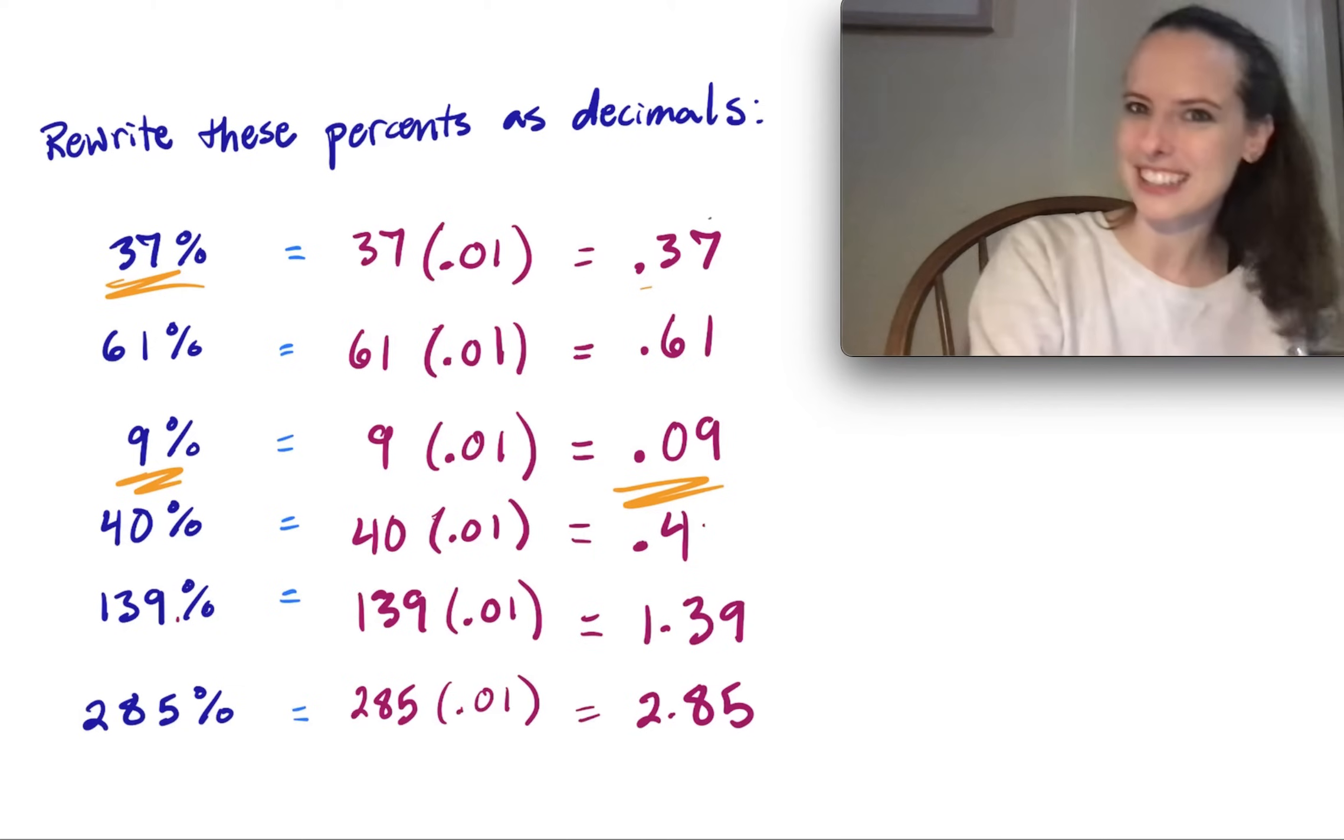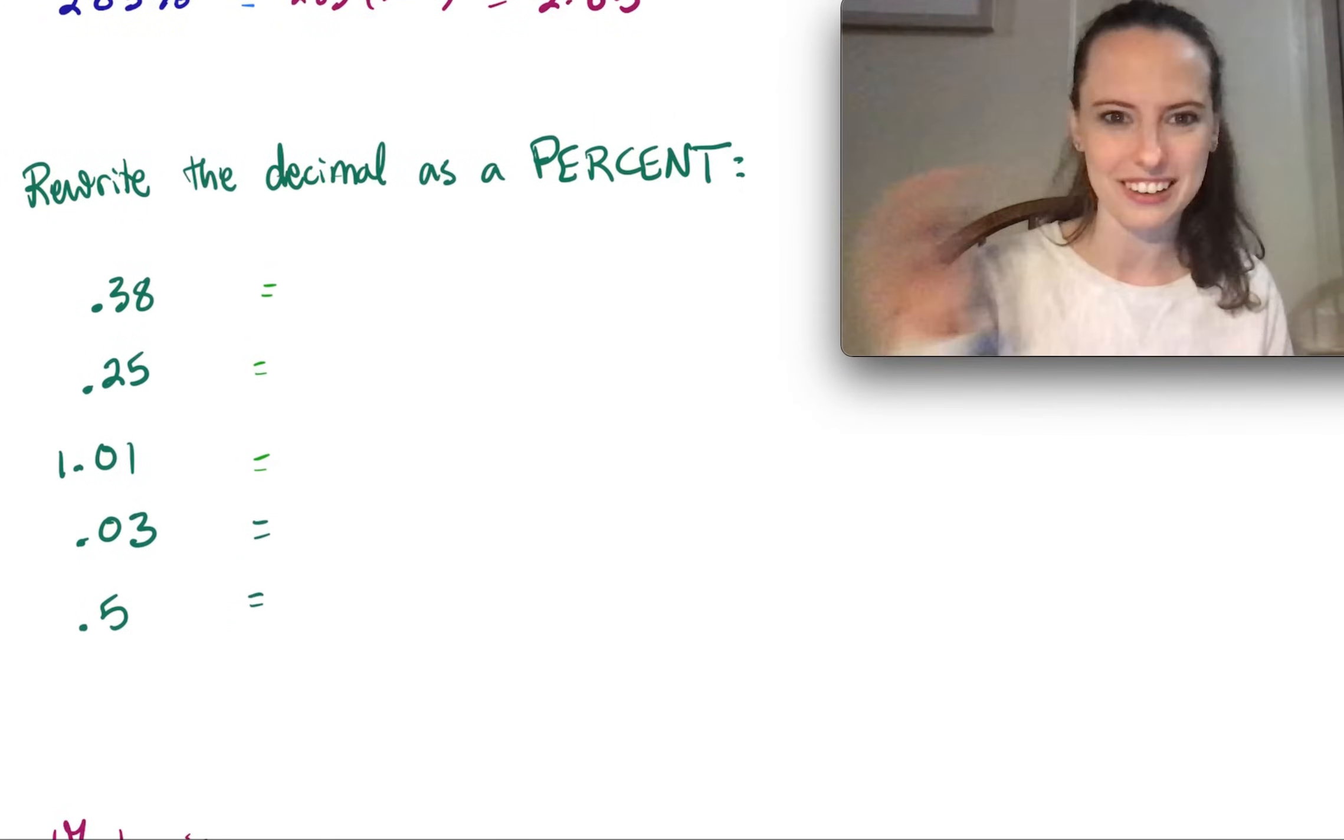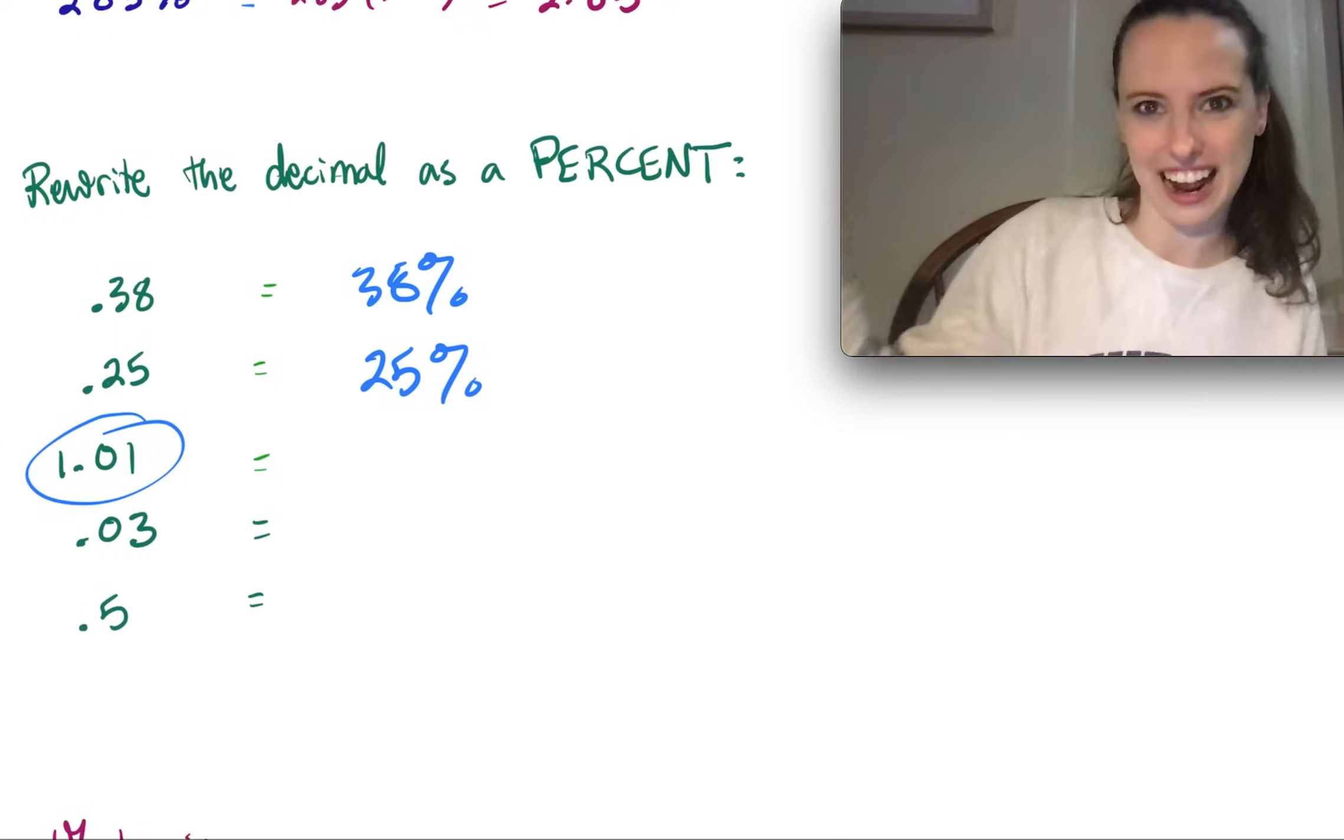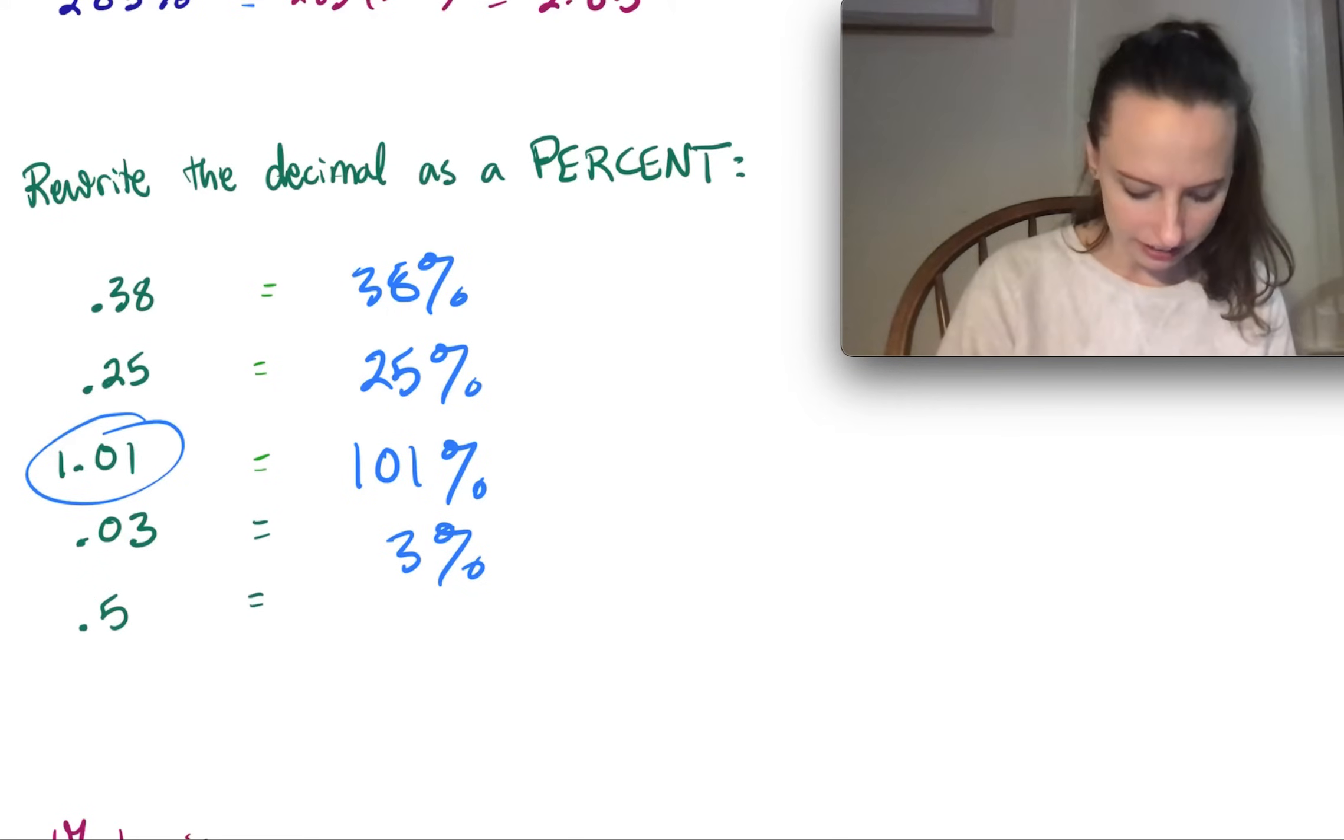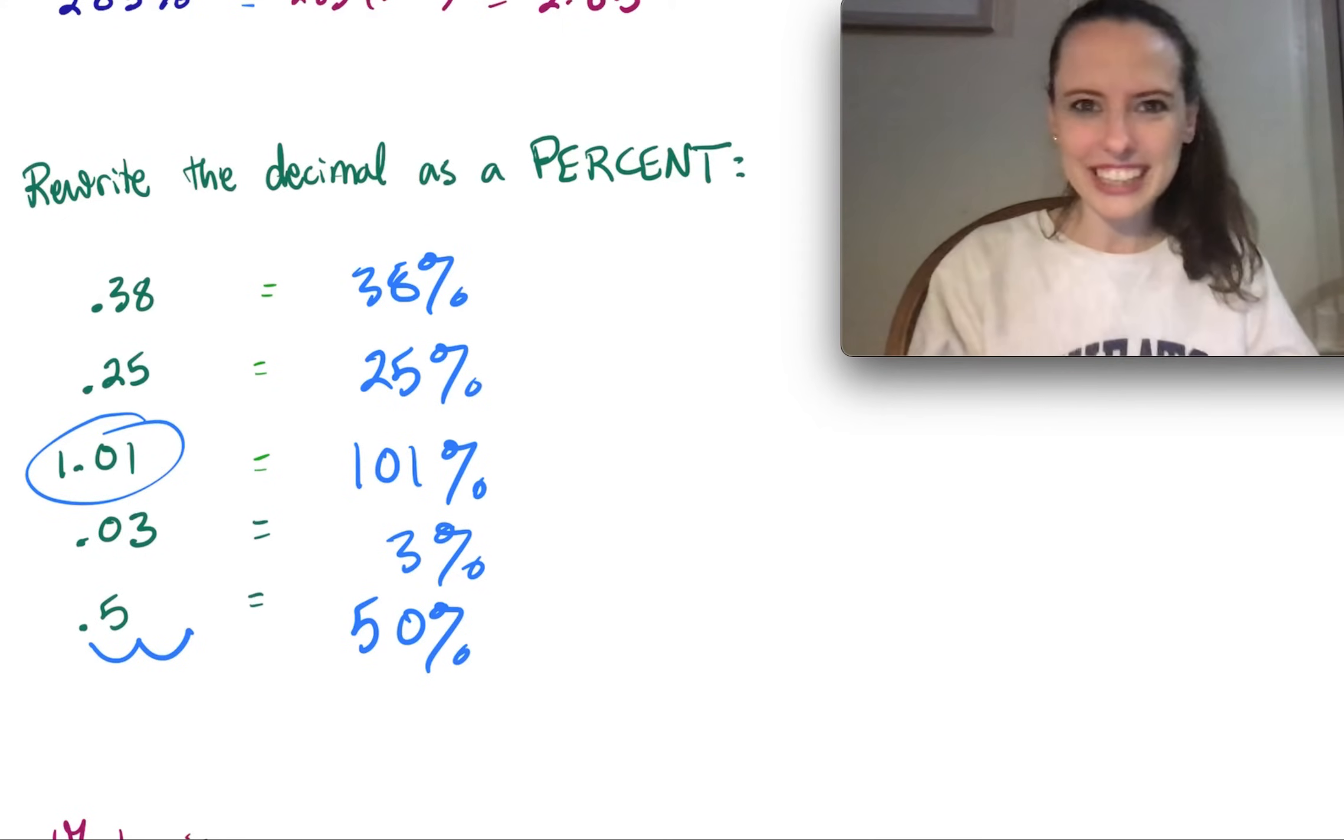Now if we can write percents as decimals, then we can also write decimals as percents. So here we've got another couple examples. I didn't write these out ahead of time, but .38 would be 38%, .25 is 25%, 1.01 - so we can have percents that are higher than a hundred - this one would be 101%, .03 is 3%, and then here we've got .5. So again, that's where you've got to think of moving that decimal place over 2 to get 50%. And if you think about it, 50% is exactly half, just like .5 is the same as a half.